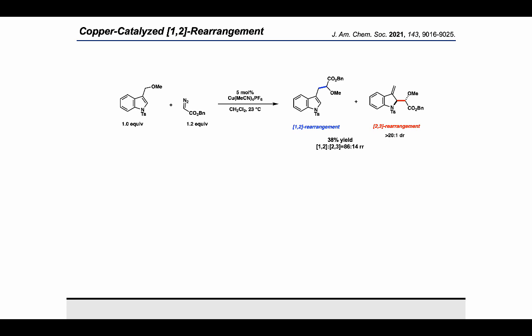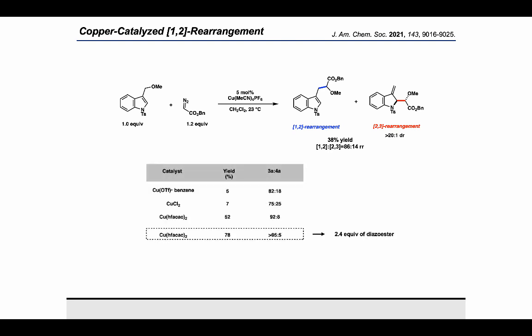So we switched from the free alcohol to the corresponding methyl ether, as well as protected the indole with a tosyl group to stabilize it from eliminating off the ether. And with this new substrate, we were very excited to see the formation of the corresponding 1,2 and 2,3 rearrangement products, with moderately high regioselectivity favoring the 1,2 rearrangement. Interestingly, the dearomatative 2,3 rearrangement product was isolated as a single diastereomer under these conditions, which was stable against re-aromatization to the corresponding indole. And after screening a couple more copper catalysts, we found that the optimized condition with copper hexafluoroacetylacetonate and excess diazo ester gave the 1,2 rearrangement product with good yield and higher regioselectivity.